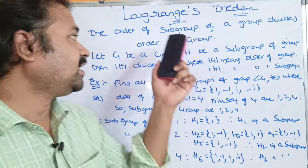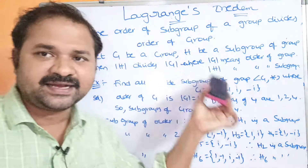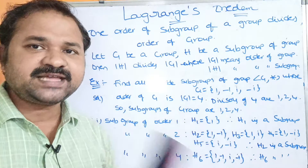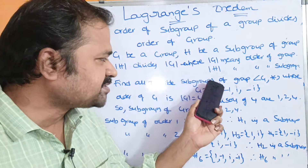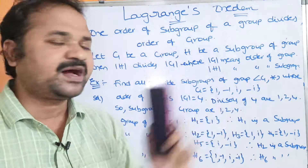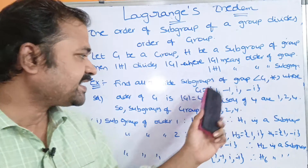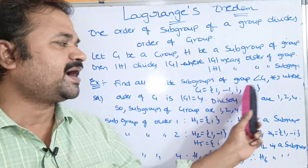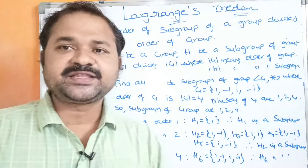Now let us demonstrate this algorithm with an example. Find all the possible subgroups of the group G with operation star, where G equals {1, -1, i, -i}.